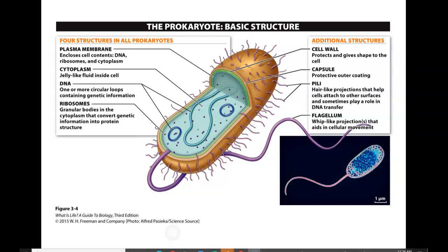The next type is the prokaryotic cell, which does not have a nucleus. Its DNA simply resides in the middle of the cell. With a prokaryote, it is going to be a circular form of DNA — you find its chromosomes in a circular pattern, not linear strings. We refer to these organisms as prokaryotes.